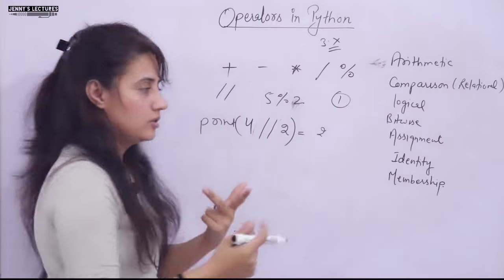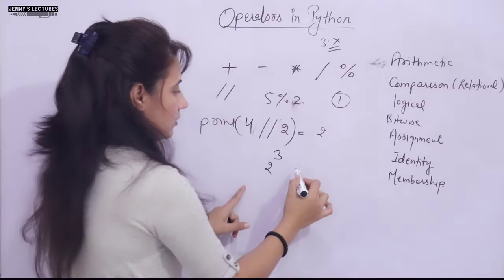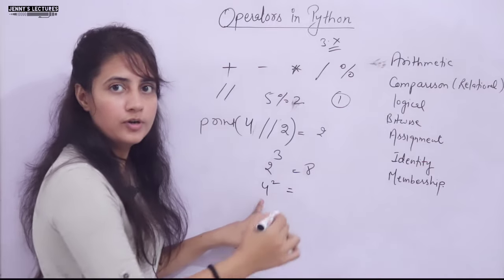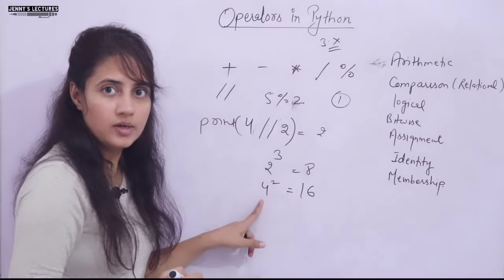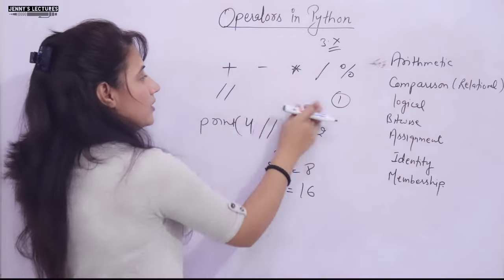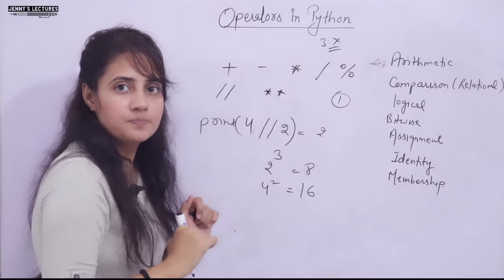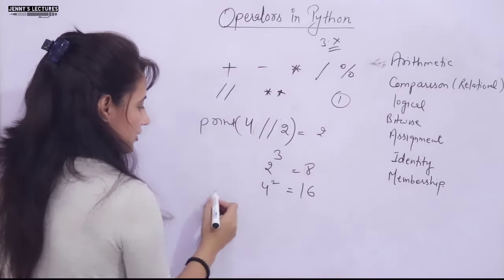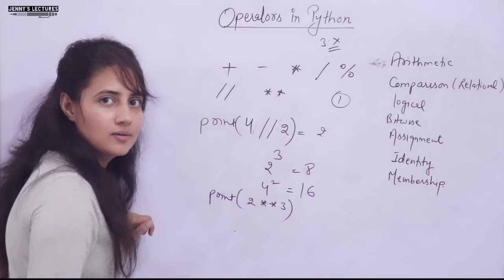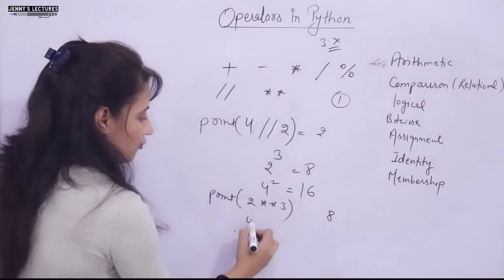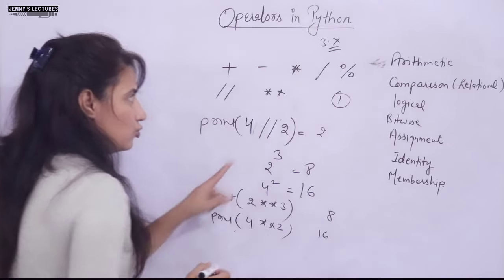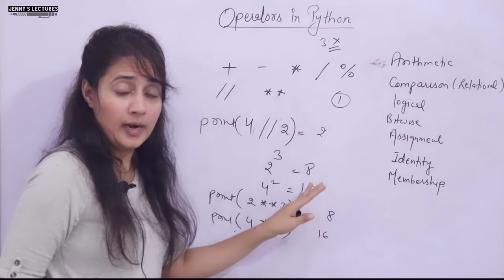Next is the power operator. For example, 2 raised to power 3 is 8, and 4 raised to power 2 is 16. In Python, you can calculate power using the double-star (**) operator. So 'print(2 ** 3)' gives 8, and '4 ** 2' gives 16. This is the exponent or power operator.